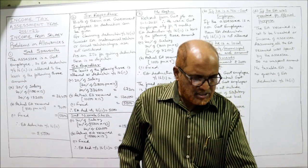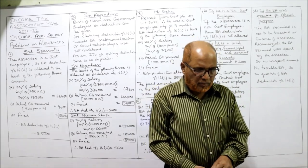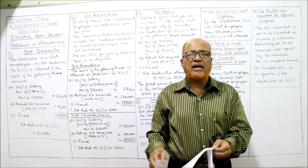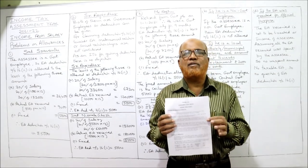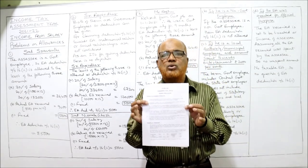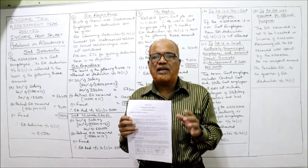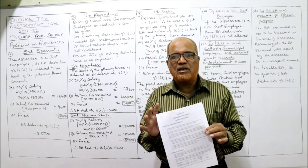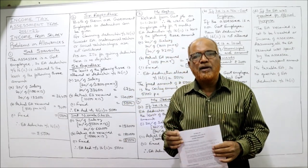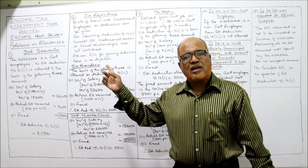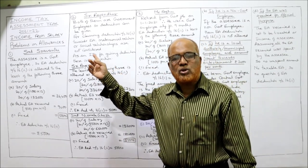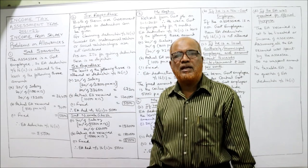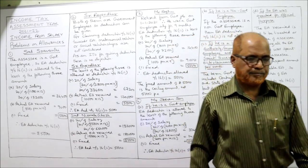Before starting the problems on allowances, I expect my viewers to have a printout of the problems given in the link under my description. Always keep the problems ready and take a screenshot of the solution of the first four problems on EA deduction, then I will explain.